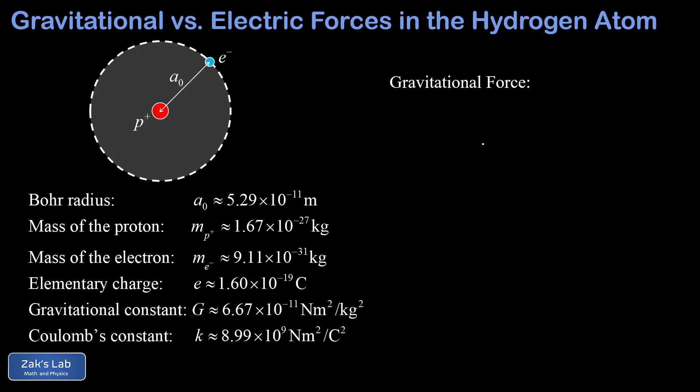So first we'll get the gravitational force between these two particles. And to get this done, we use Newton's law of gravitation. It says the force of gravity between two masses is given by G times the product of the two masses divided by the distance between them squared. So now we just have to plug all these numbers into Newton's law of gravitation.